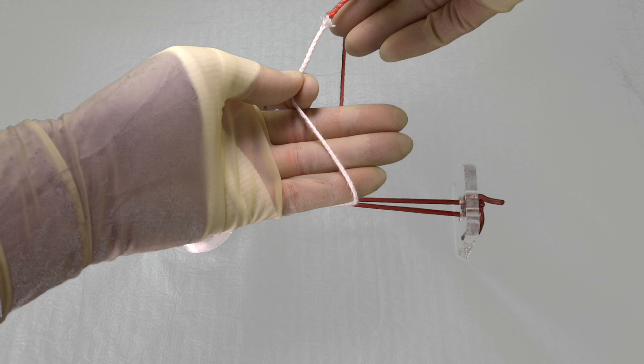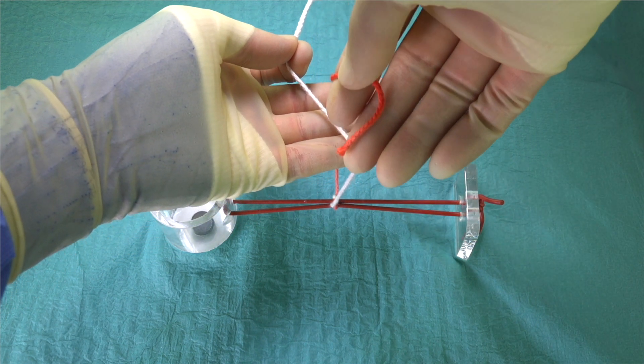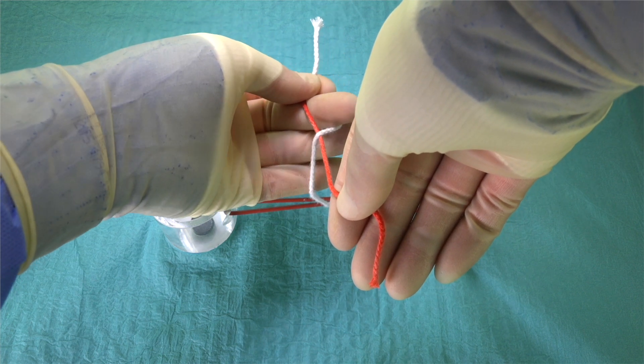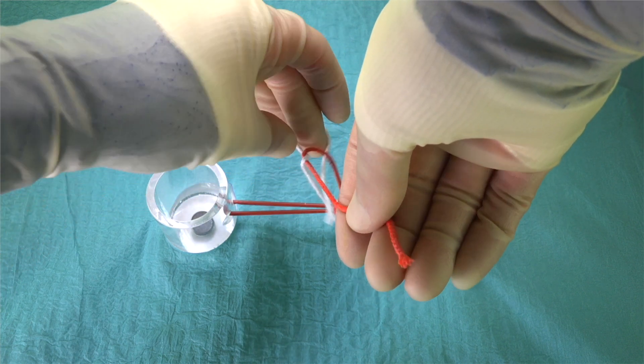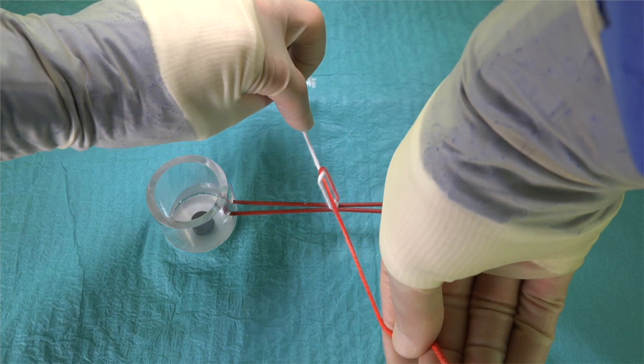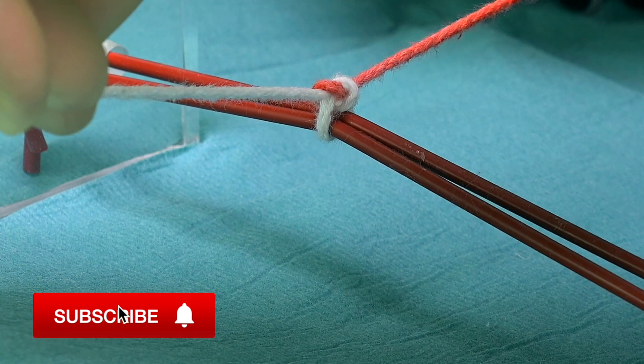The next throw involves supinating the left hand whilst holding the suture between the left thumb and index finger with the suture wrapped slightly around the left little finger. The right hand then brings the long end of the suture over the middle fingers of the left hand. The left middle finger then loops around the long end of the suture to hook the short end and pulls it through the loop. The short end of the suture is then taken away from us again at 180 degrees.